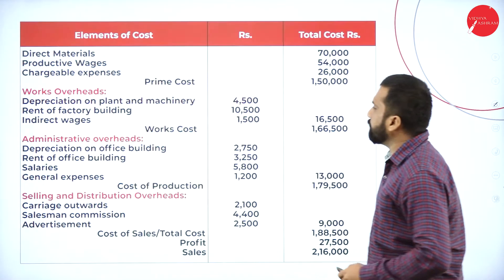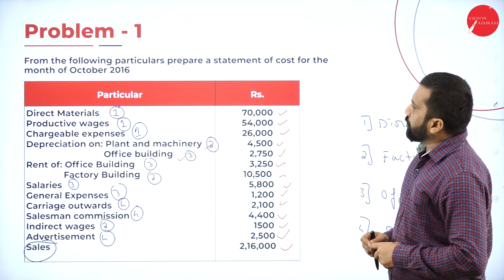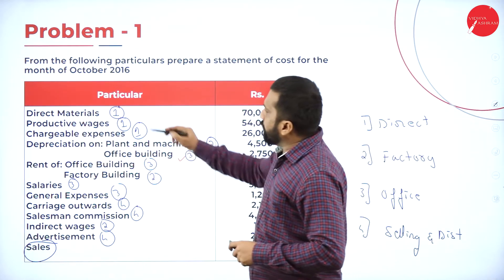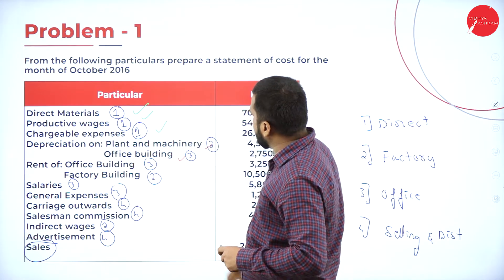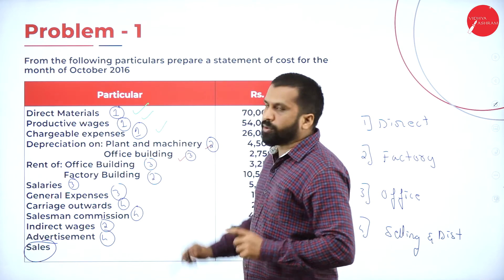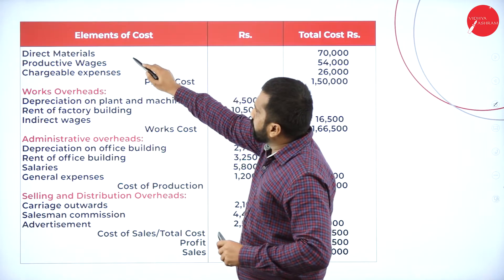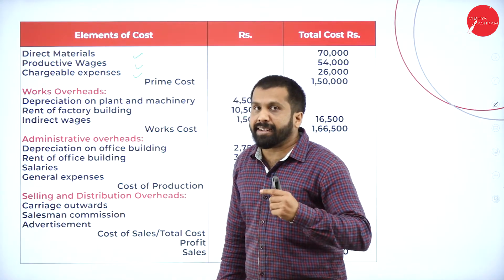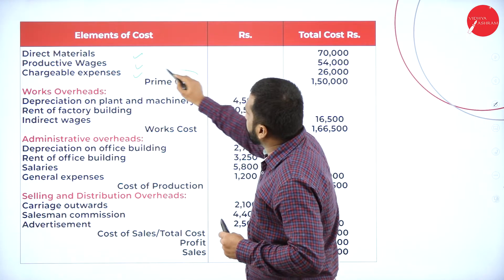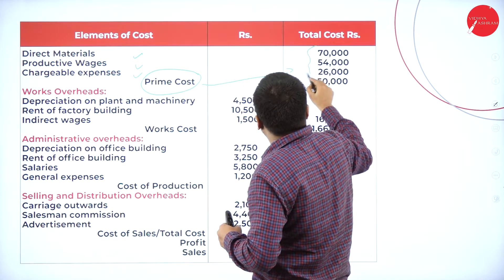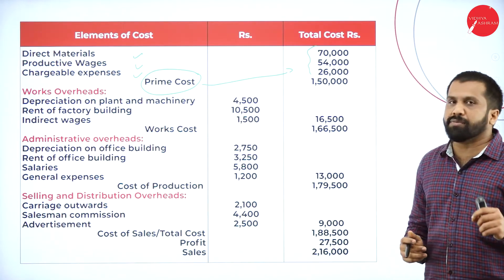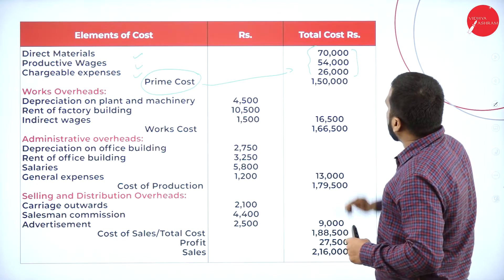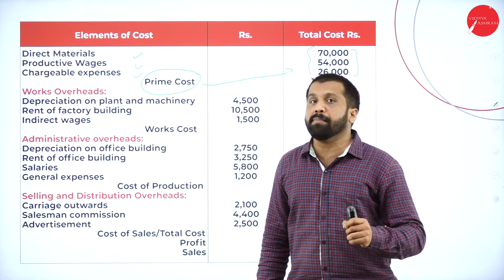I will go to the answer now. Items marked as step one — direct material, direct wages, and chargeable expenses — total three items. Direct material 70,000 plus productive wages 54,000 plus chargeable expenses 26,000. If you add: 70 plus 54 plus 26 gives 120, 140, 150. So 1,50,000 will be called as your prime cost.